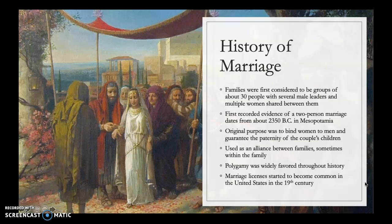So a little background: the history of marriage is that families were first considered to be groups of about 30 people with several male leaders and multiple women and children shared between them. The first recorded evidence of a two-person marriage dates from about 2350 BC in Mesopotamia, and the original purpose was to bind women to men and guarantee the paternity of the couple's children. It is believed that marriage was initially started so that males would know which children were theirs.